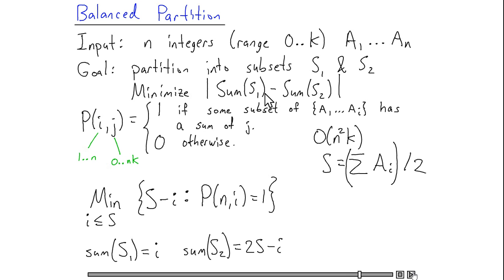If I now look at my objective, the absolute value of the difference of the sum of s1 minus the sum of s2, then I see that this is going to be equal to twice s minus twice i, which is nothing more than twice the value of this minimization expression. So if I look at this minimization expression, it gives me the optimal objective value for my problem, and I'm also able to find the sets s1 and s2, which achieve that optimal objective.